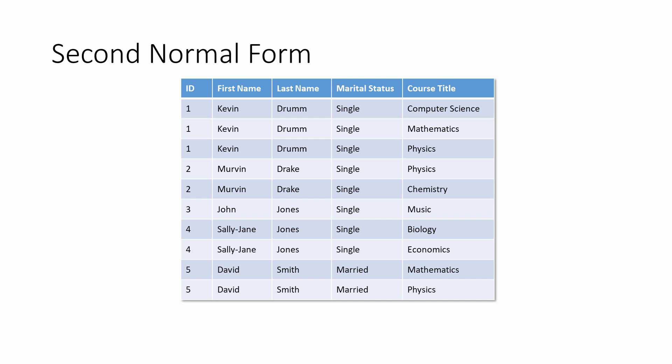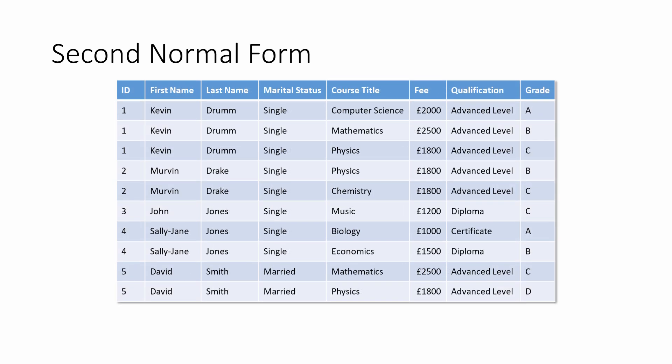Is that a problem? Well, it could become one. Imagine there were thousands of records — there'd be even more duplication. And imagine one of the students got married and you wanted to update their marital status. You'd need to make exactly the same change in several places. This is how inconsistency errors can start to creep in. Let's add some more columns to exaggerate the problem.